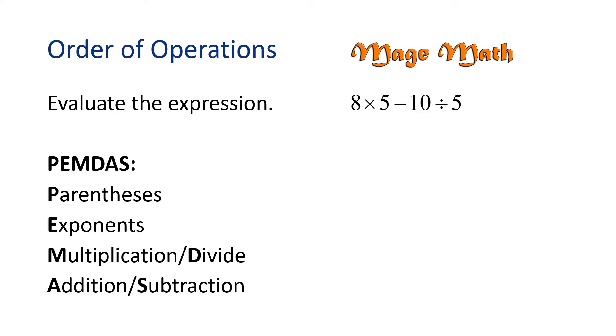Okay, let's look at our problem. In this problem, the operations from left to right are multiply, subtract, divide. But, following the order of operations, we need to multiply and divide first before we subtract.